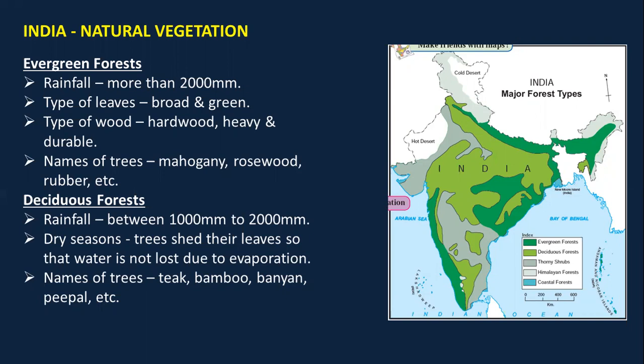Remember, when writing examples, write at least two to three. Also understand that the trees in evergreen forests — like mahogany and rosewood — that are found in India are also found in Brazil. There is not much difference; the same types of trees are present at both places, because it is evergreen forest.